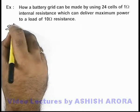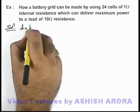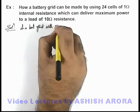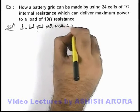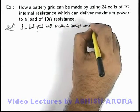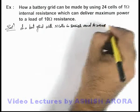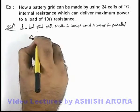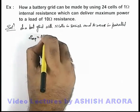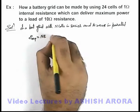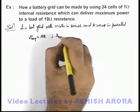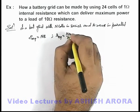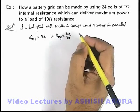In a battery grid with n cells in series and m rows in parallel, the equivalent EMF of the battery grid is nE, where E is the EMF of each individual cell. The equivalent internal resistance is nr/m, where r is the internal resistance of each cell.